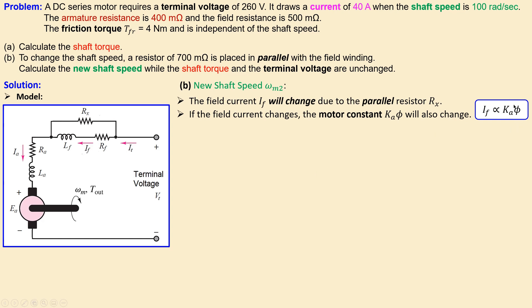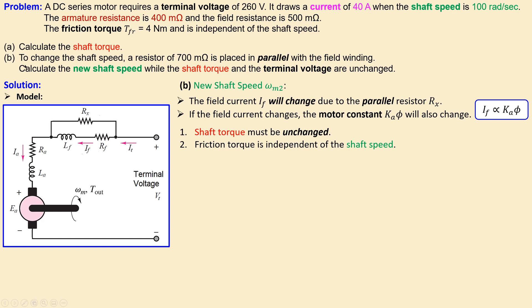The shaft torque must be unchanged as stated in question B, and the friction torque is independent of shaft speed. These two conditions mean the developed torque in the second case, with the parallel resistor Rx, must equal the developed torque in the first case, which was 89.6 newton meters.